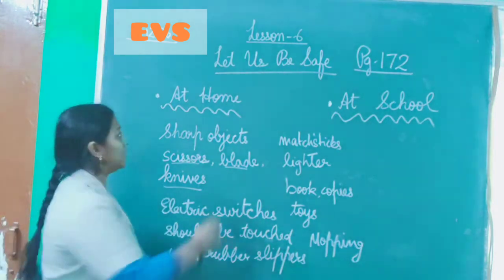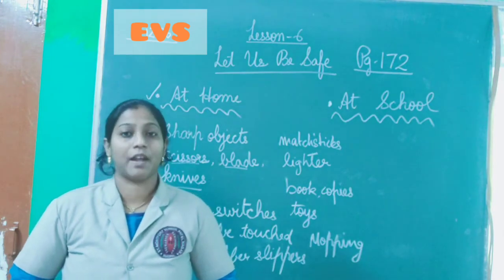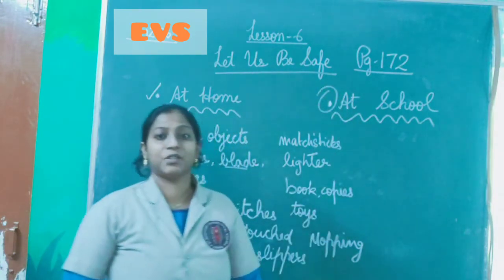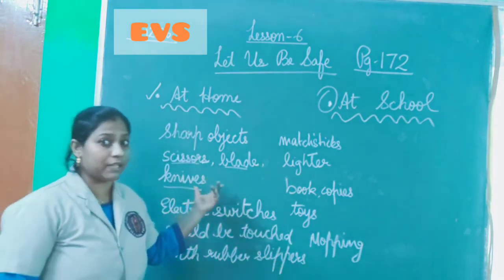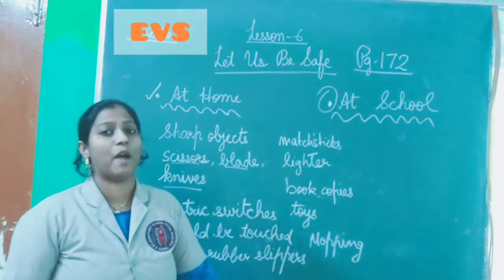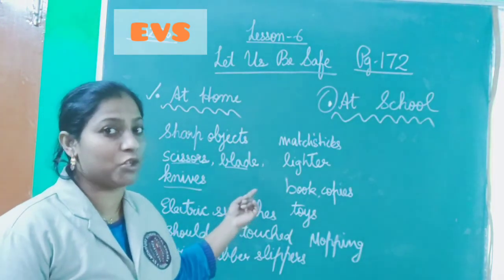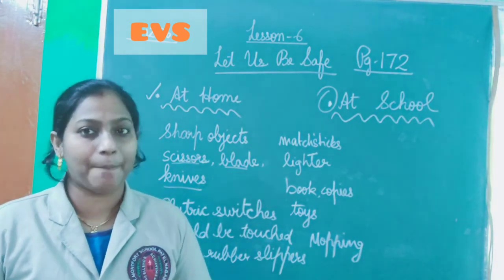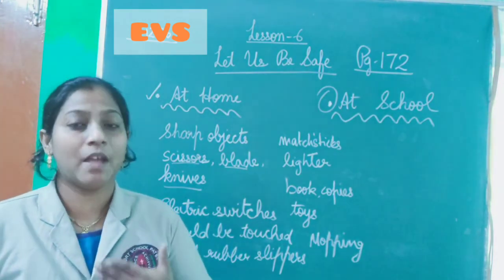These are the safety rules you should follow while staying at home. In the next period, we will cover safety rules at school. Students, don't just read these rules — understand them and follow them in your life. These safety rules are not only for reading but to bring them into practice. Also teach your younger siblings and other little children to follow these rules.